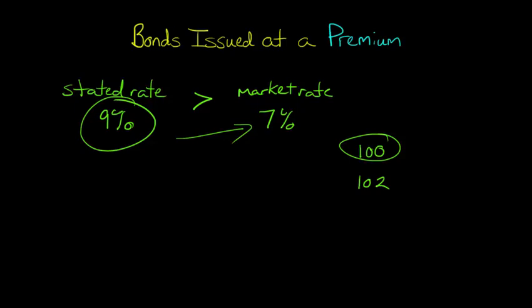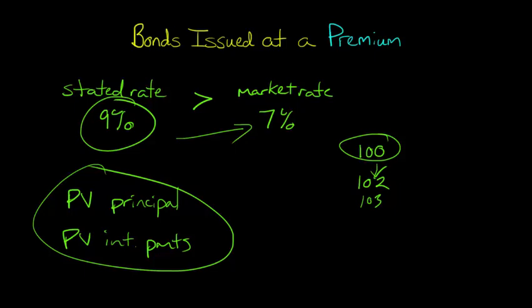So how do we determine what the premium is? Now we understand why there would be a premium — why it would be $102 instead of $100 — but why $102 and not $103 or $104? What we need to do is calculate the present value of the principal of the bond (the face amount that has to be paid back) and then the present value of the interest payments. When we add those two together, that gives us the proceeds we're going to get — the $102, the $103 — and the starting carrying value of the bond.